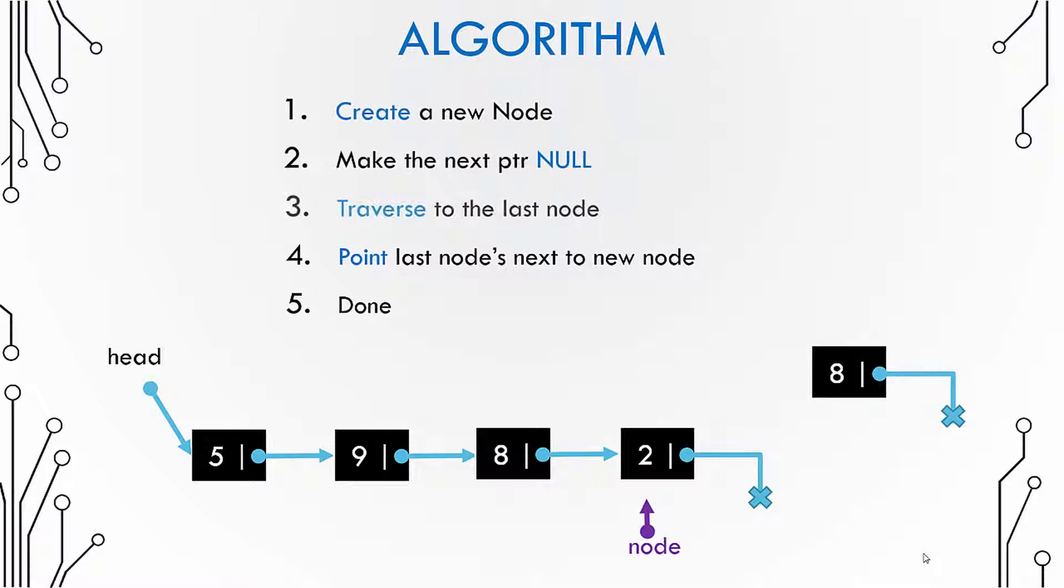Now once you reach the last node, you can access its next pointer. So naturally what you would do is point the next pointer of the last node to the newly created node.